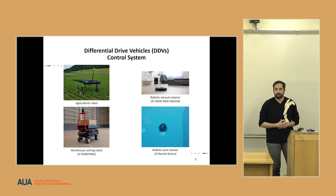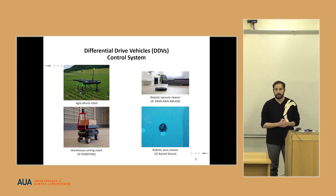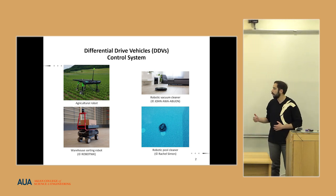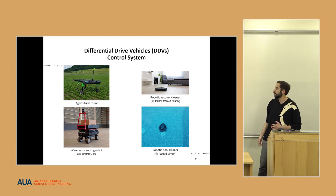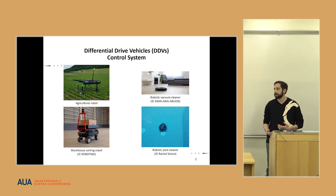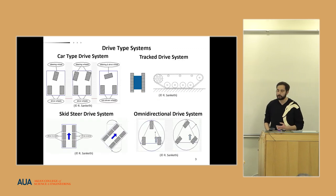Nowadays, DDVs have become a part of our lives and can be used in every sphere, such as in the agriculture sphere, in warehouses, houses, and as robotic pool cleaners. The differential drive vehicle moves by changing the speeds of two independently driven wheels, and there are four types of differential drive systems.